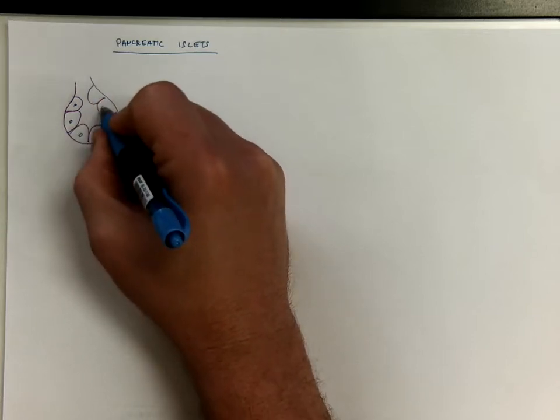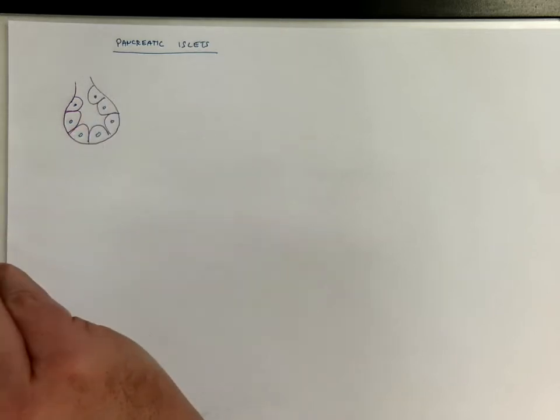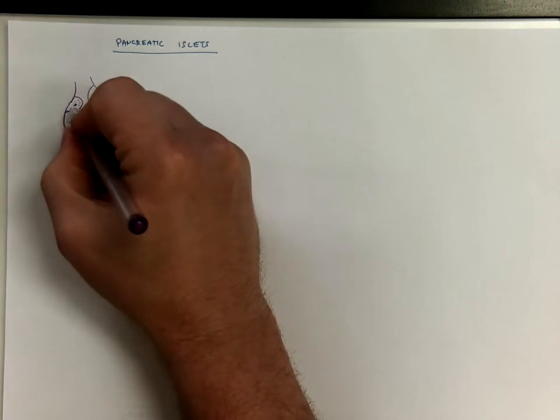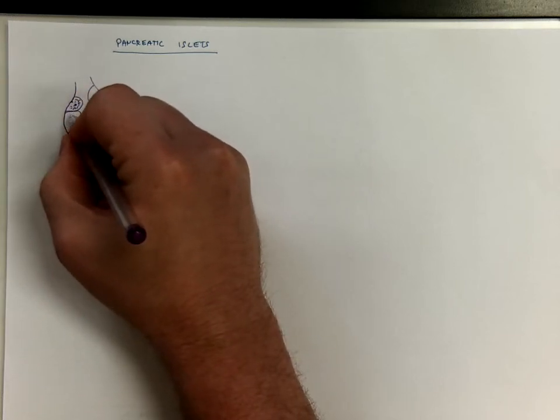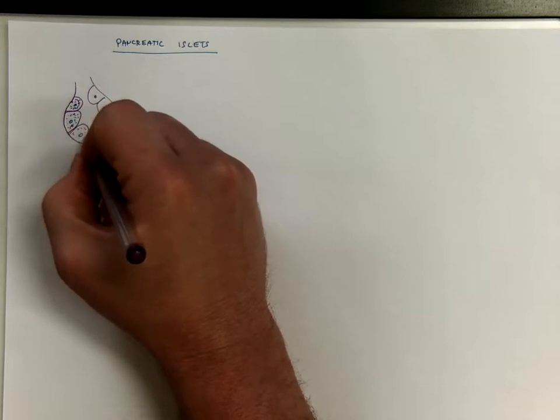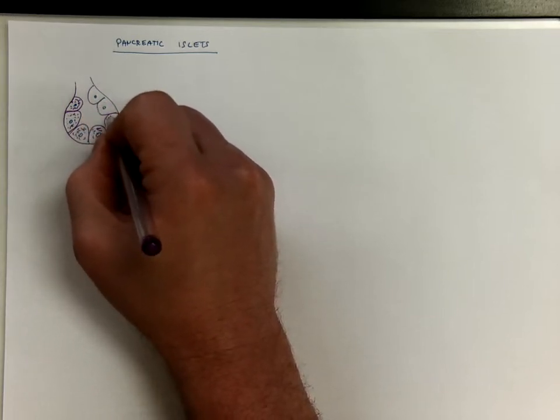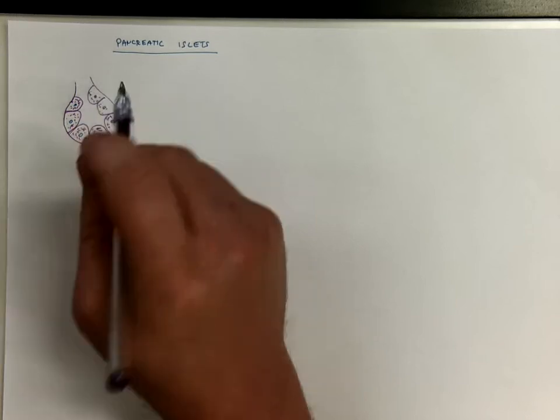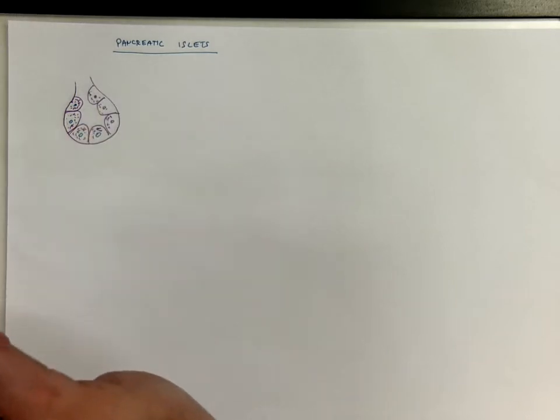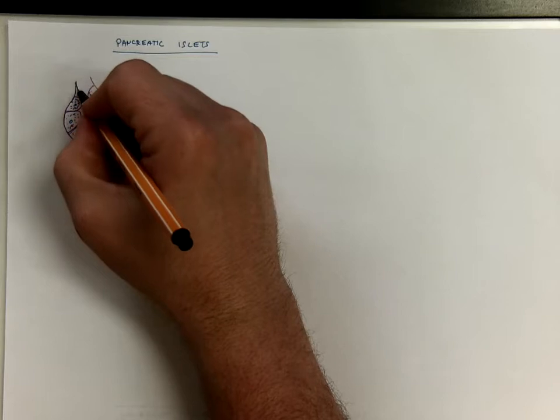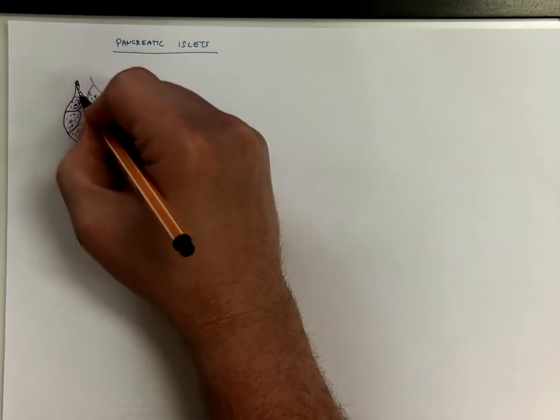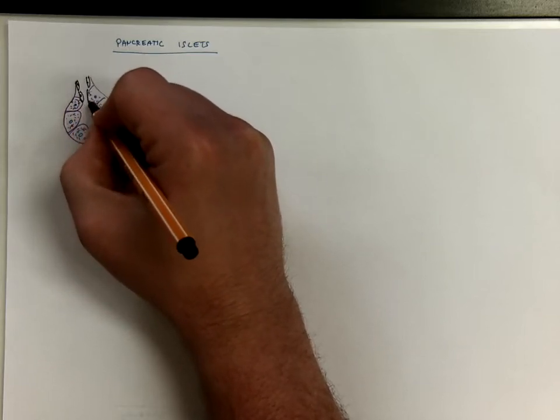These are basophilic cells that are specialized for producing proteins with the zymogenic granules here and centroacinar cells come from the intercalated ducts here.